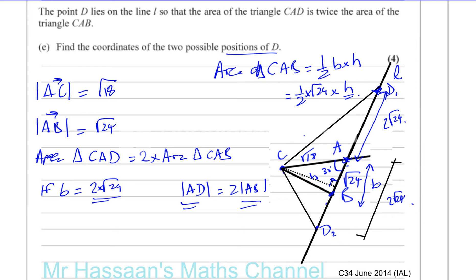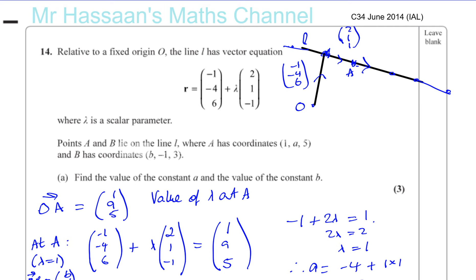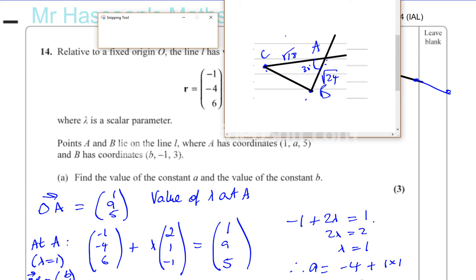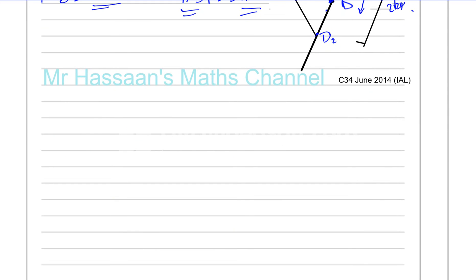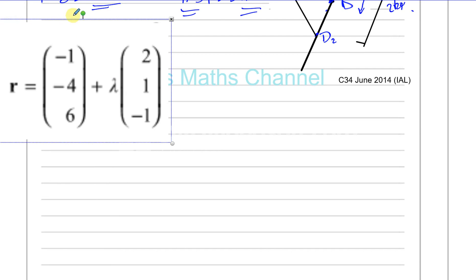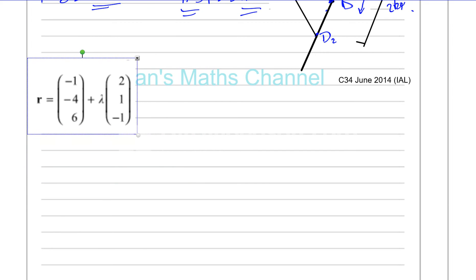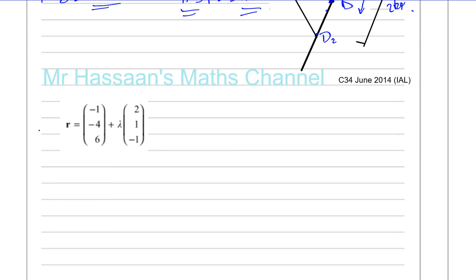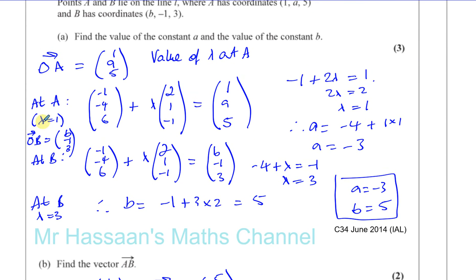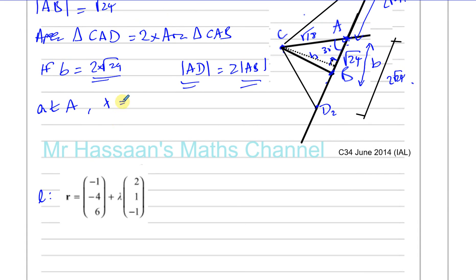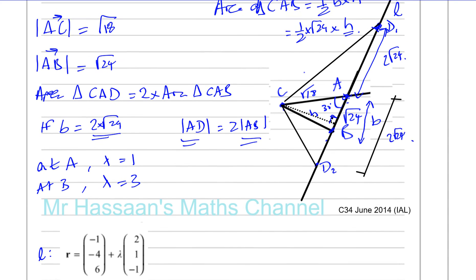Let's go back to the beginning of the question. We know the equation of line L, and we also know the lambda values for points A and B. At point A the value of lambda was one, and at point B the value of lambda was three. That's going to help us find the positions of D.